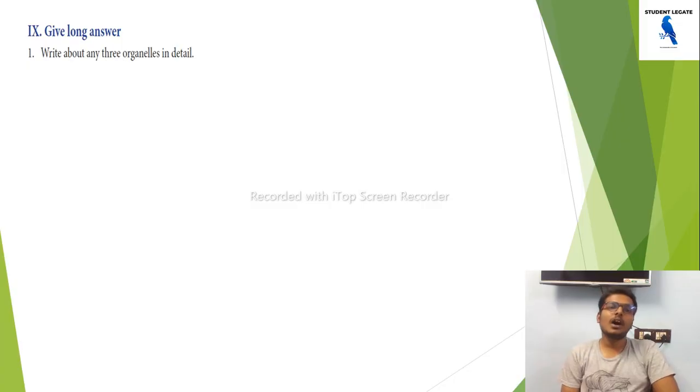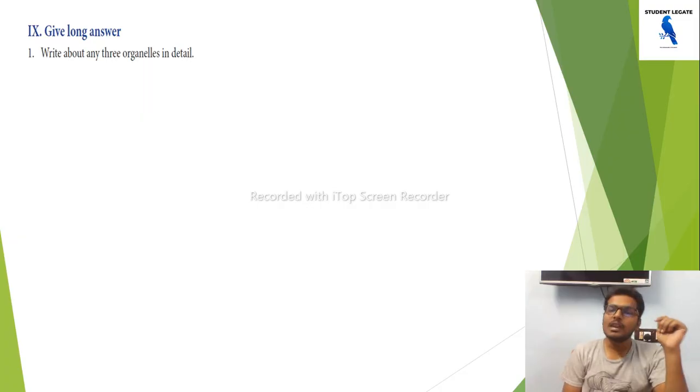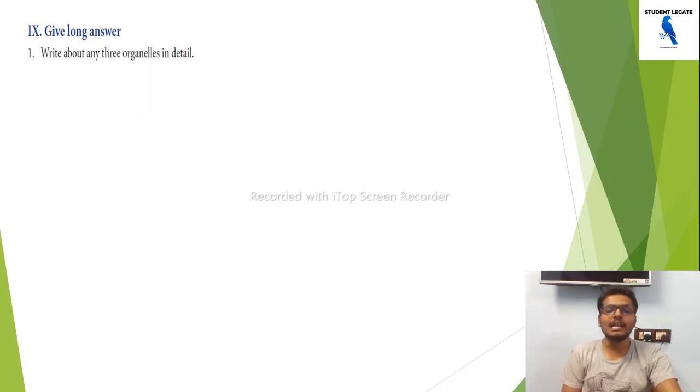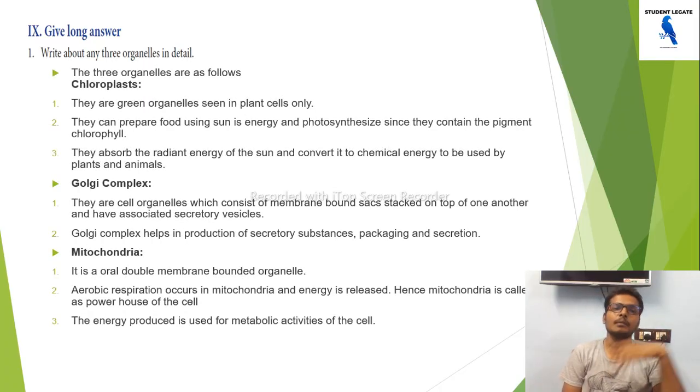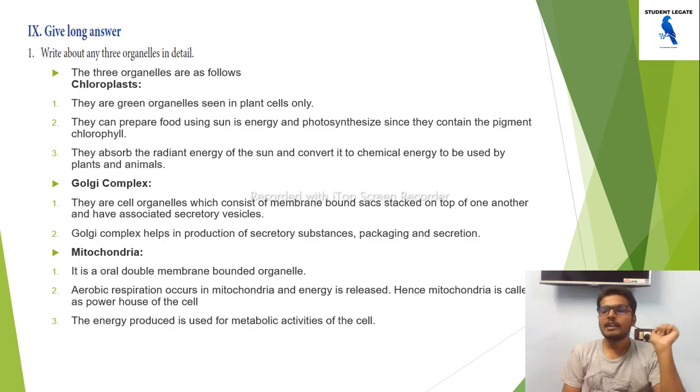Write about any three organelles in detail. You can choose chloroplasts, Golgi bodies, and mitochondria.